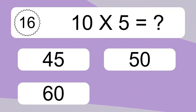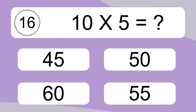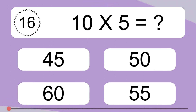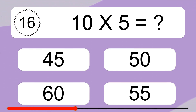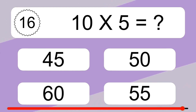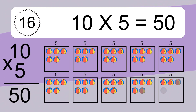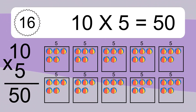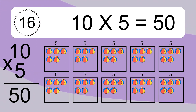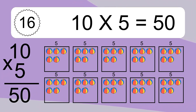10 times 5 equals what? 10 times 5 equals 50. We have 10 boxes and each box has 5 colorful balls inside. If you count all the balls in all the boxes together, you will have 10 times 5 balls. This equals 50 balls.